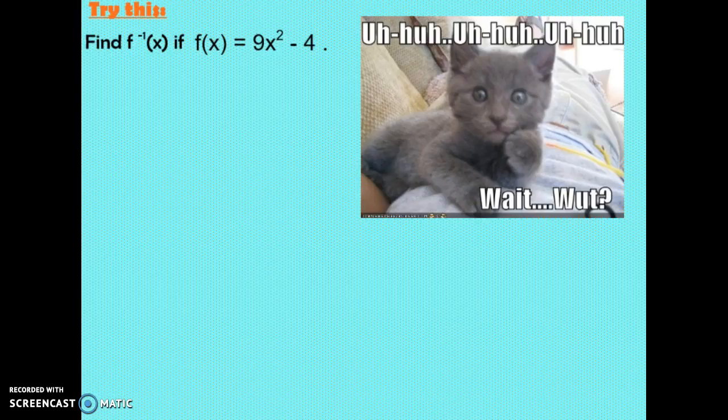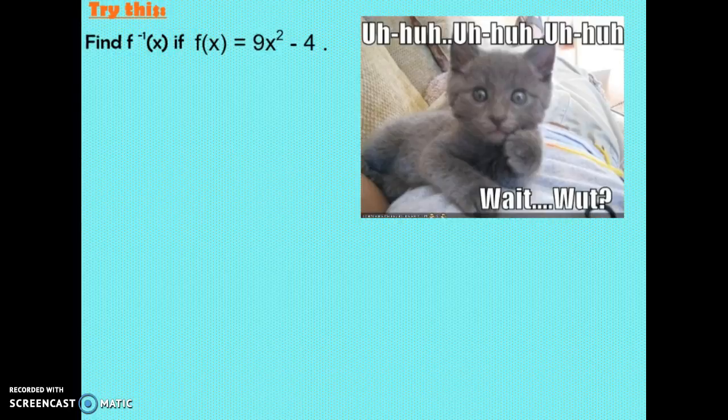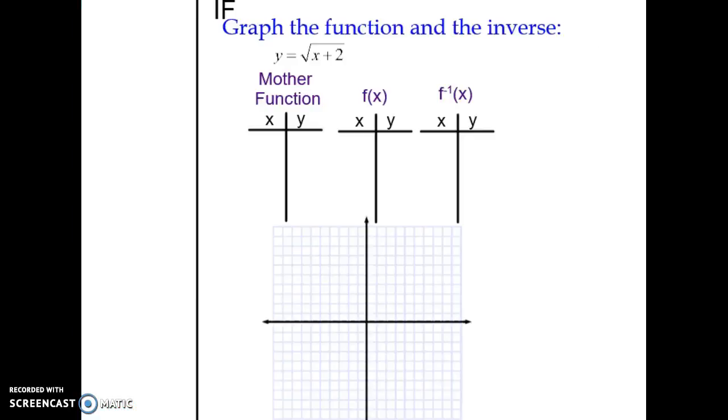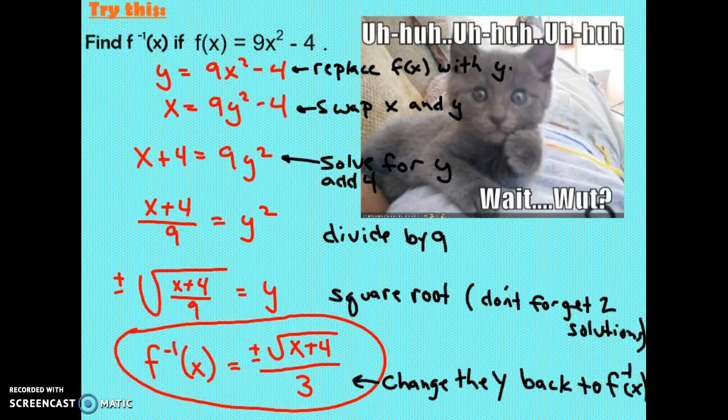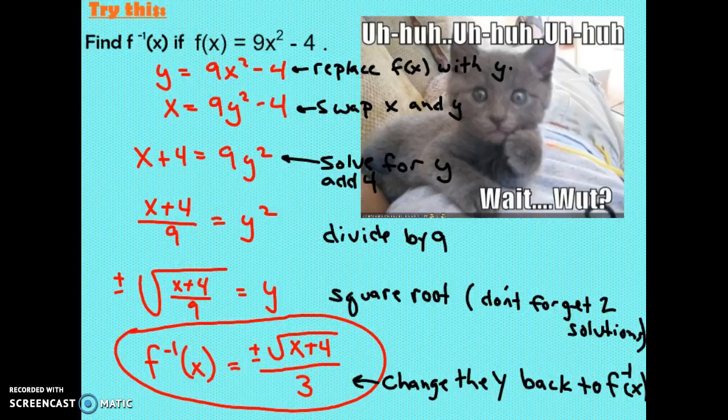Here is another one. Would you pause the video and see if you can solve for the inverse of f? I'll give you a moment. Just pause here. Remember to swap the x with y and then solve for y. Ready? Pause it. Okay, I'm going to show you the solution. You ready? Welcome back. The solution should be the inverse of f of x is equal to plus or minus the square root of x plus 4 all over 3. Follow the steps. Review your work. How'd you do?